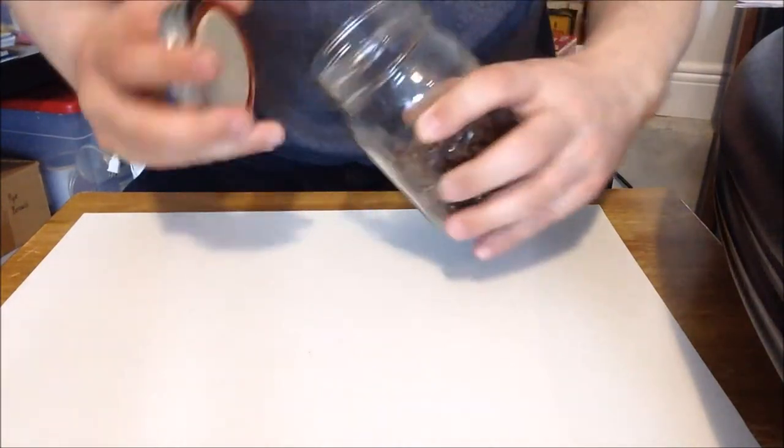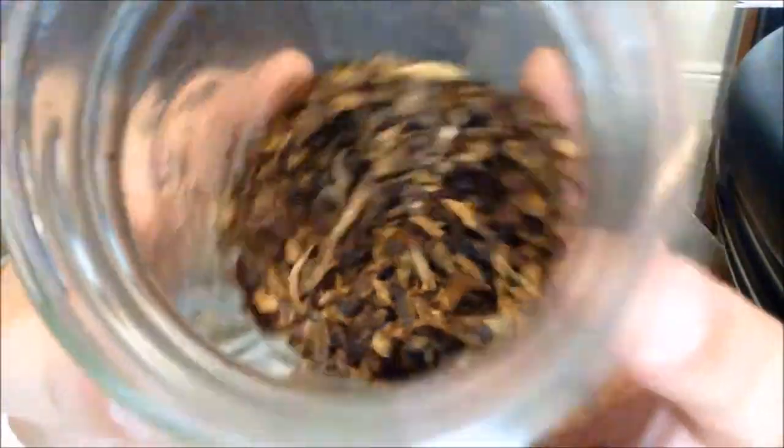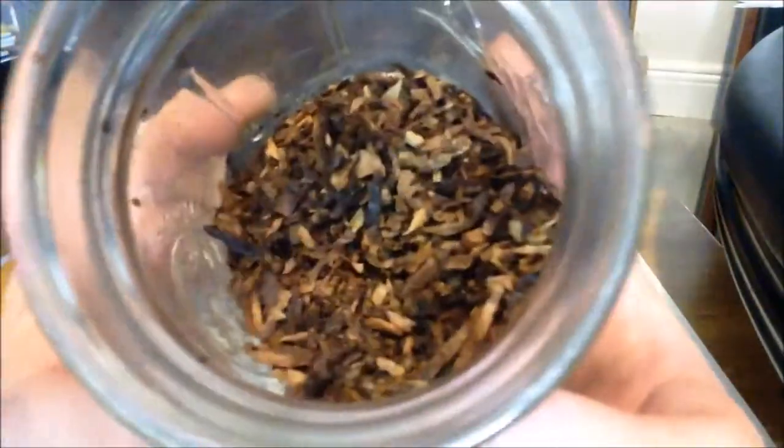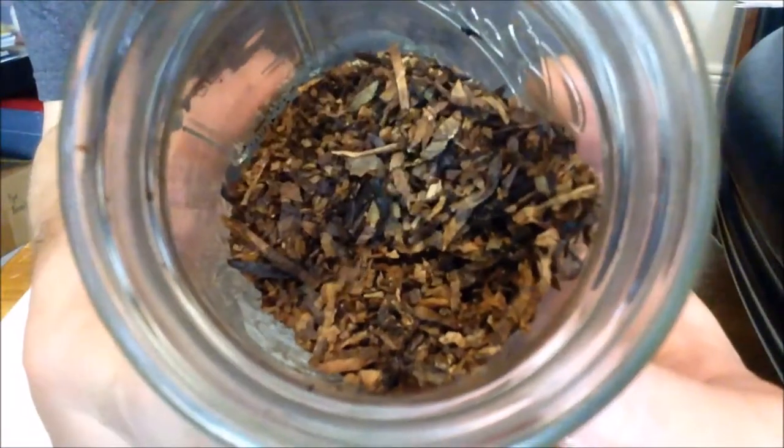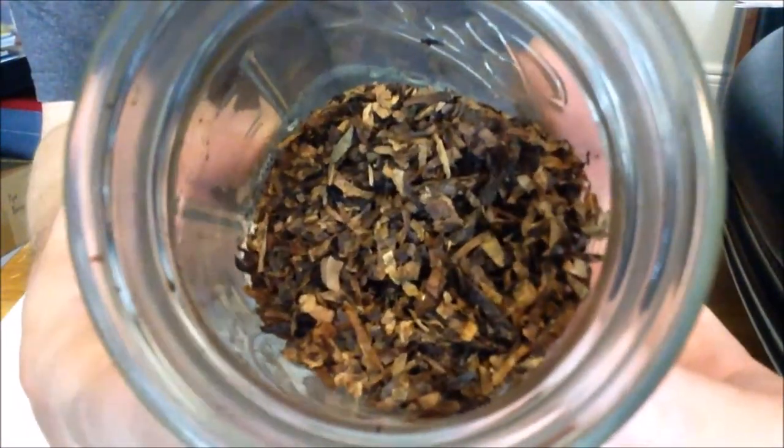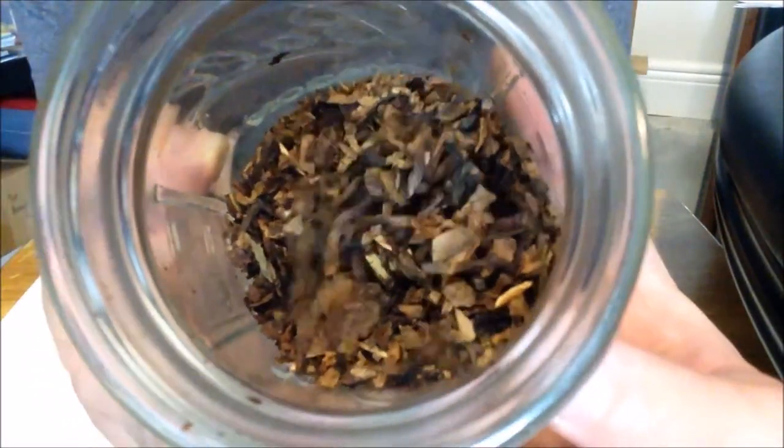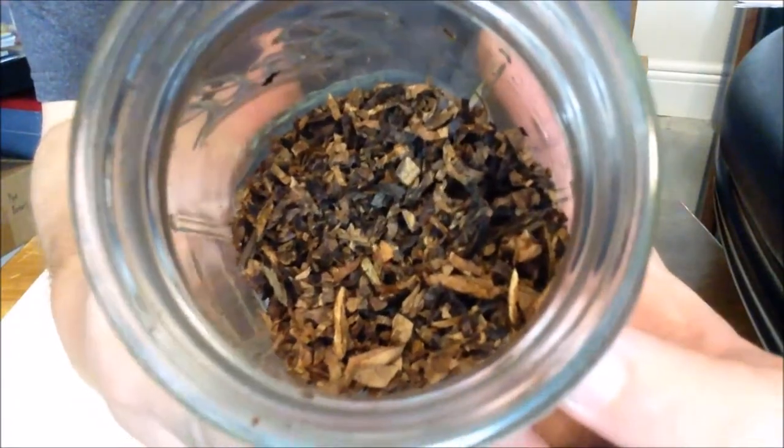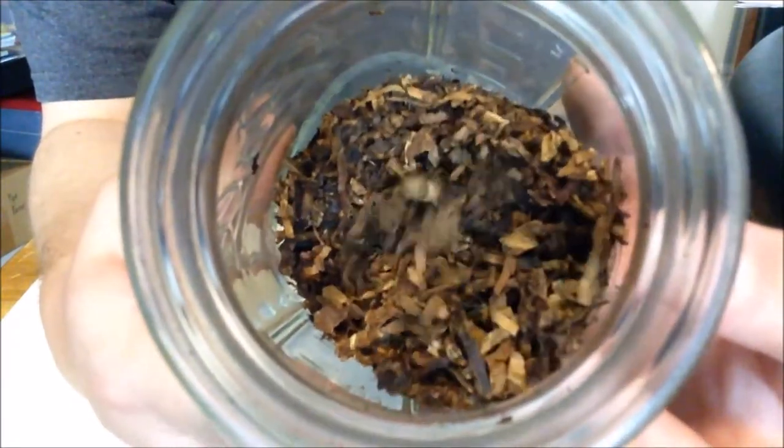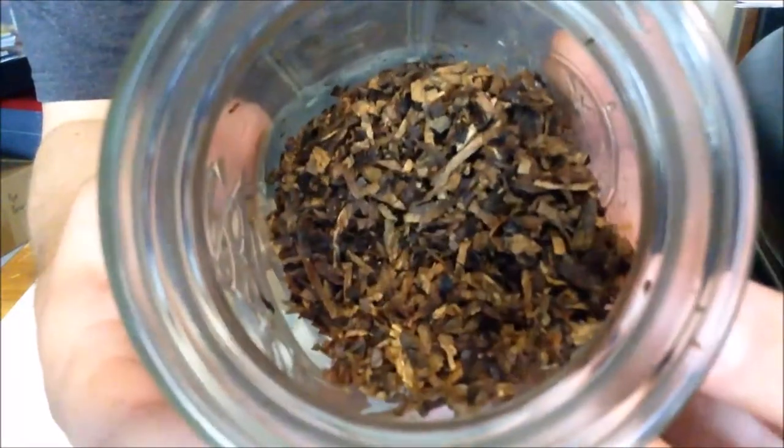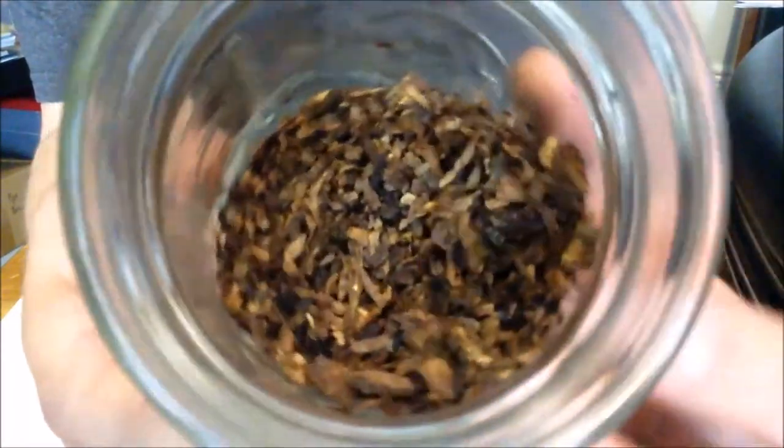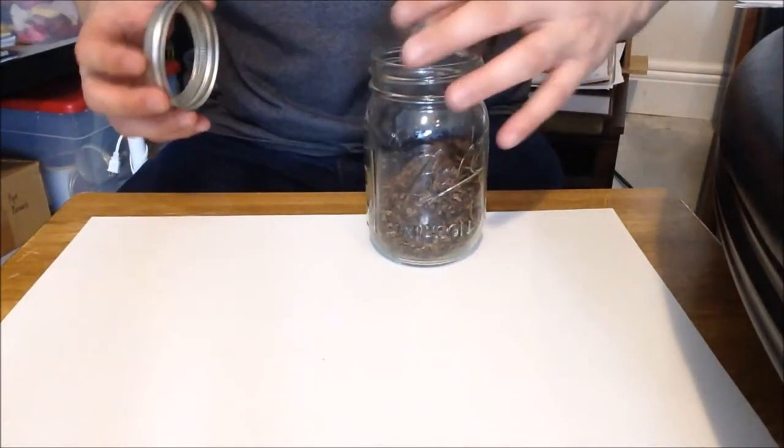Next up, I've got a coarse cut blend. This is Cornell and Deal's Haunted Bookshop. I don't know if you'll be able to see that. But it's similar to the ribbon cut, but it's a little bit more coarse, not quite as uniform. So you'll have some smaller pieces and some bigger pieces. This I believe is sometimes referred to as a coarse cut or a cross cut. So that's Cornell and Deal's Haunted Bookshop.